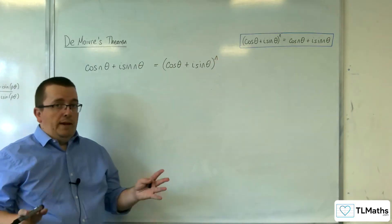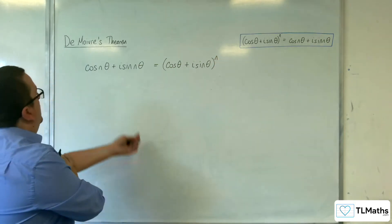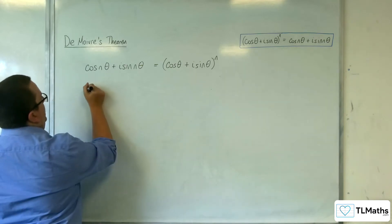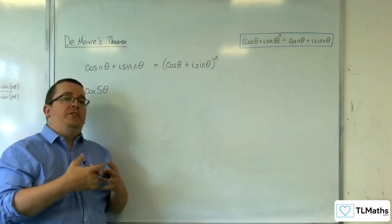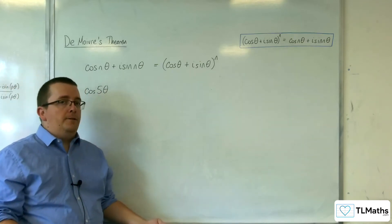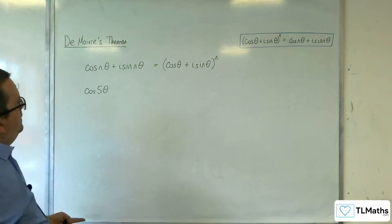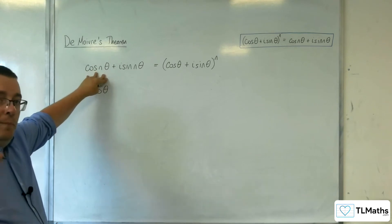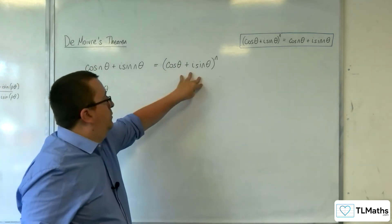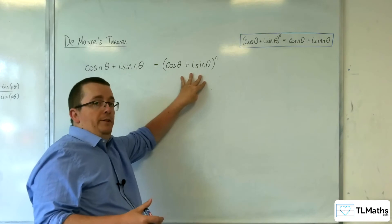So, the idea would be that if you wanted, let's say, cosine of 5 theta, and you wanted to work out what that was in terms of just cosine theta, then the cosine n theta is the real part of the left-hand side, which must be the same as the real part of the right-hand side.